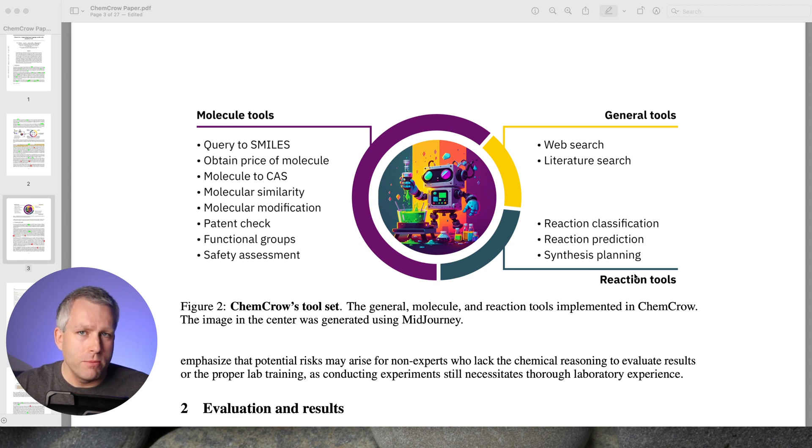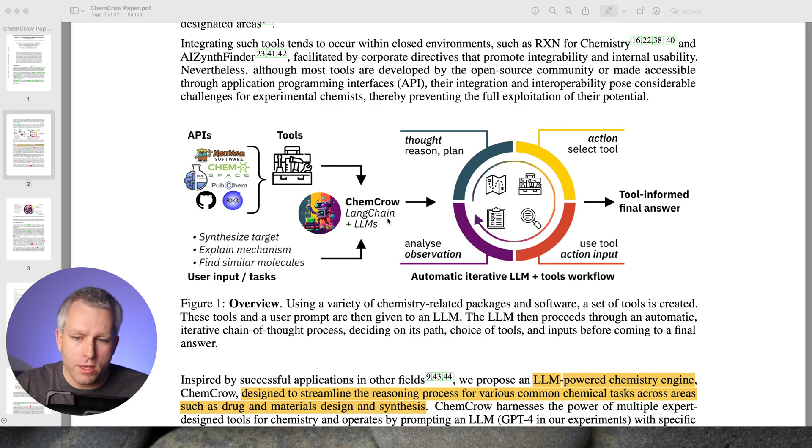The reaction tools are probably the most complicated. They have reaction classification tool, reaction prediction tool, and synthesis planning. Some of these are proprietary, and they explain everything really nicely in the method section. Once the large language model is integrated with the tools, you can go into this working cycle of ChemCrow. And I'll explain this on a particular example, so it's easier to understand.